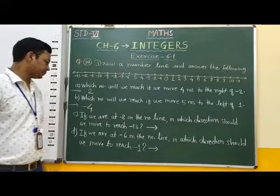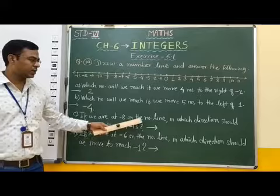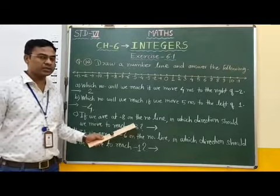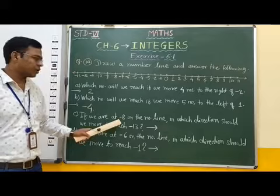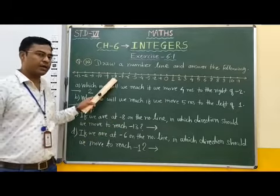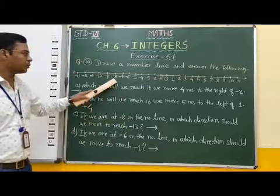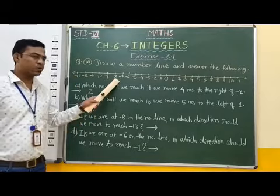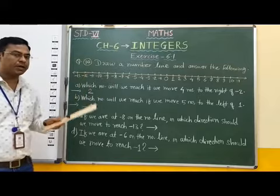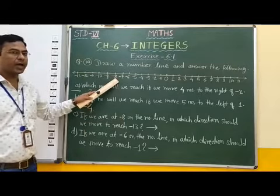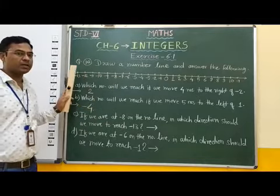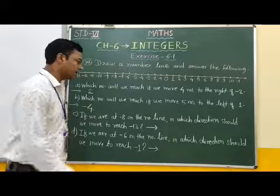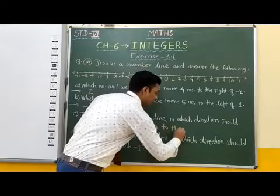Next question: If we are at minus 8 on the number line, in which direction should we move to reach minus 30? We start from minus 8 and have to reach minus 30. From minus 8 to minus 30, we will move to the left. Therefore, the answer of this question is to the left.